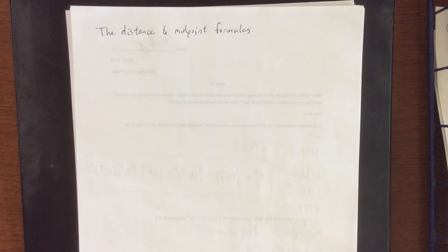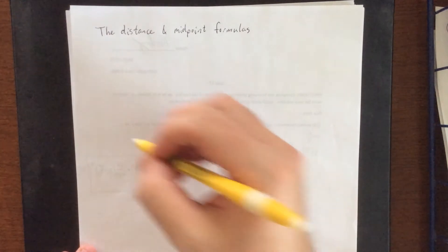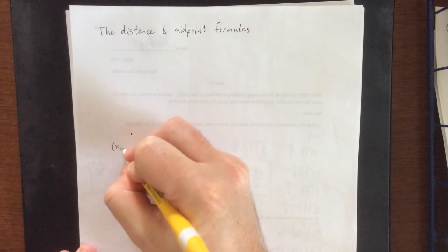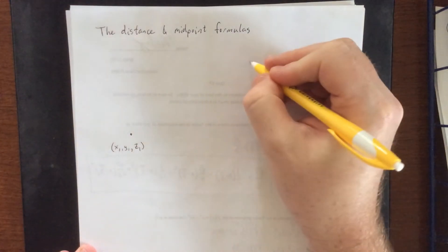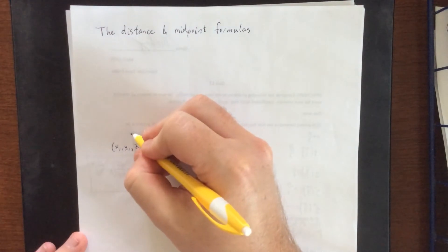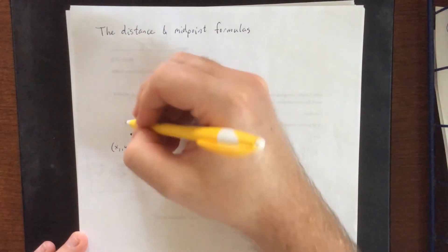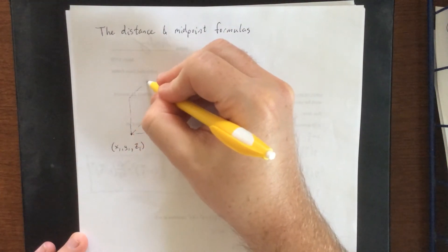Next up in our three-dimensional coordinate system, we're going to introduce the distance and midpoint formulas. Suppose that we have a point in three dimensions, we'll call it (x₁, y₁, z₁), and we have another point in three dimensions that we're going to sketch out a box to represent the distance from one to the other.